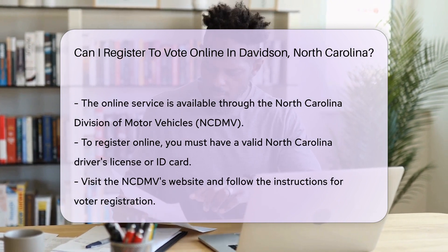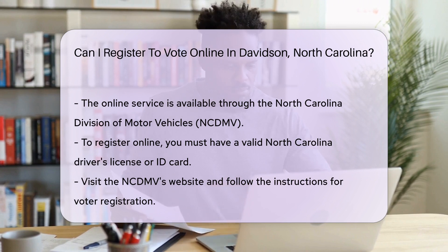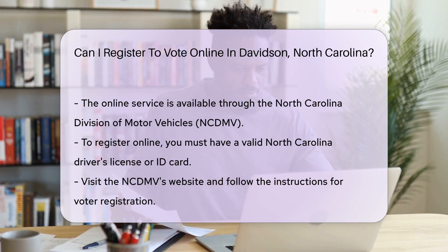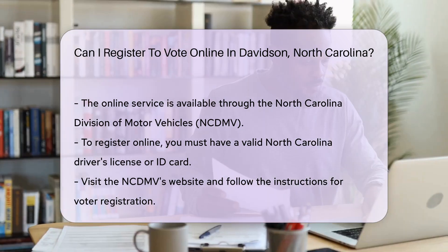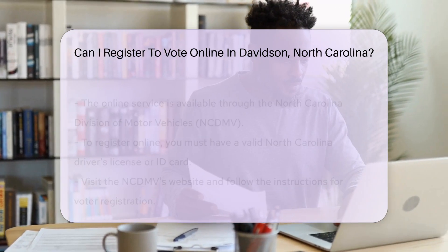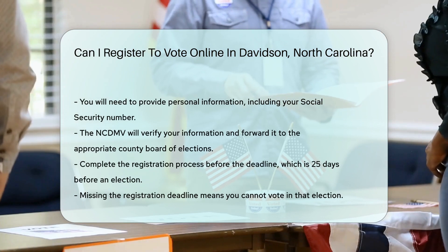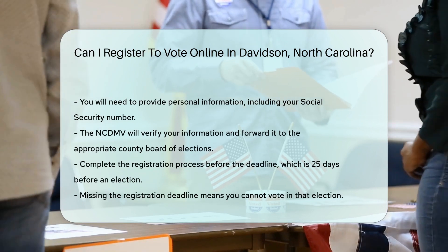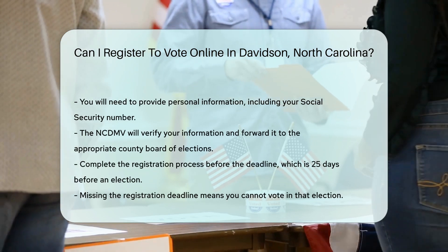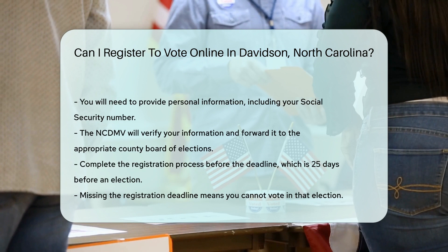Visit the NCDMV's website and follow the instructions for voter registration. You will need to provide personal information, including your Social Security number. The NCDMV will verify your information and forward it to the appropriate County Board of Elections.